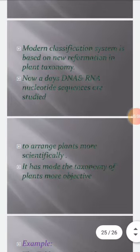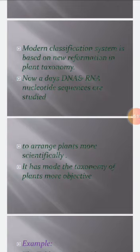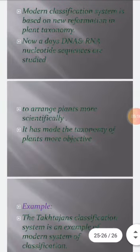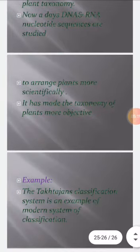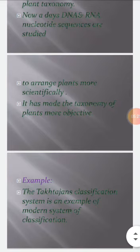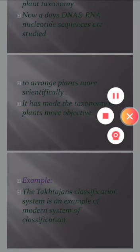The modern system is based on new reformations in plant taxonomy and classification. Nowadays, DNA, RNA, and nucleotide sequences are used to arrange plants more scientifically into groups, and this has made the taxonomy of plants more objective. An example is the Takhtajan system of classification, which is an example of a modern classification system of plants.